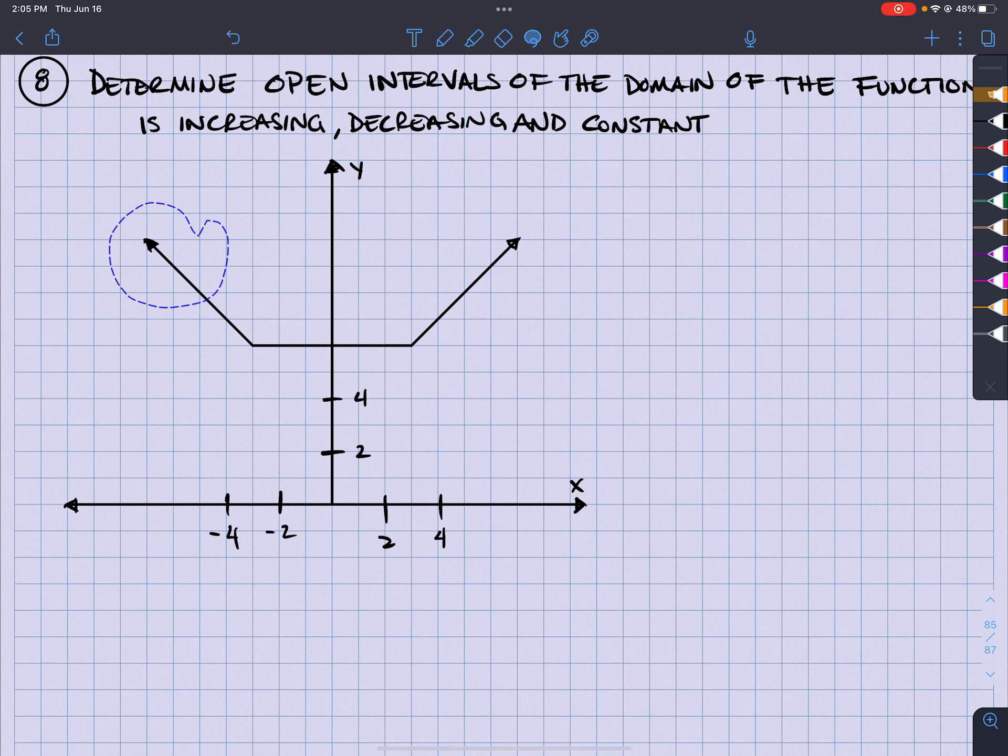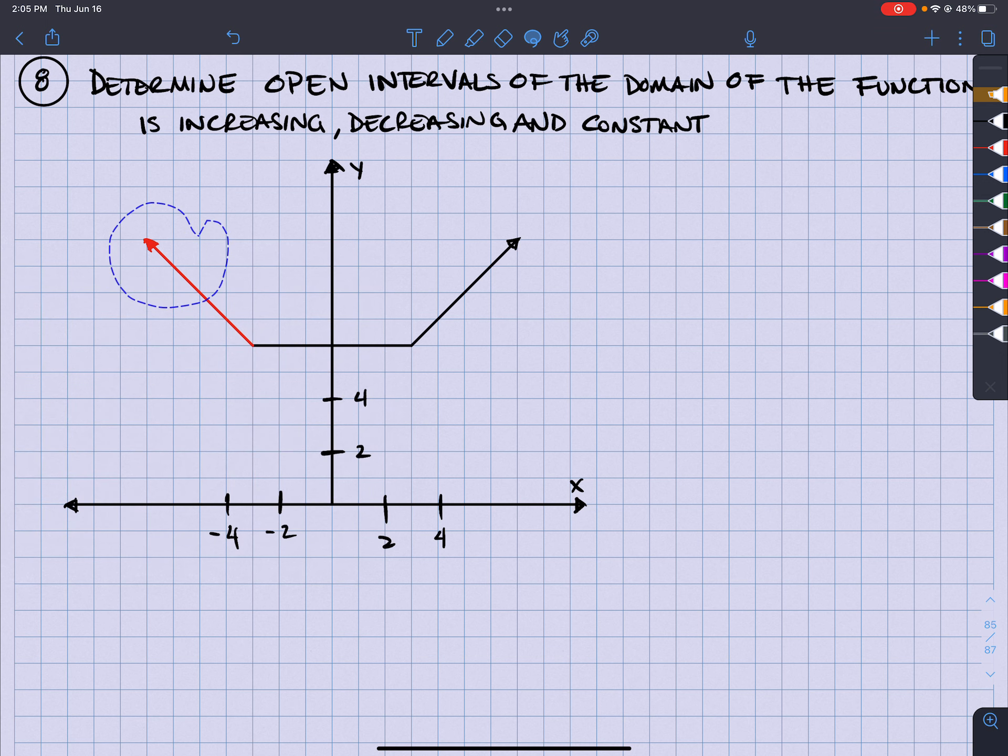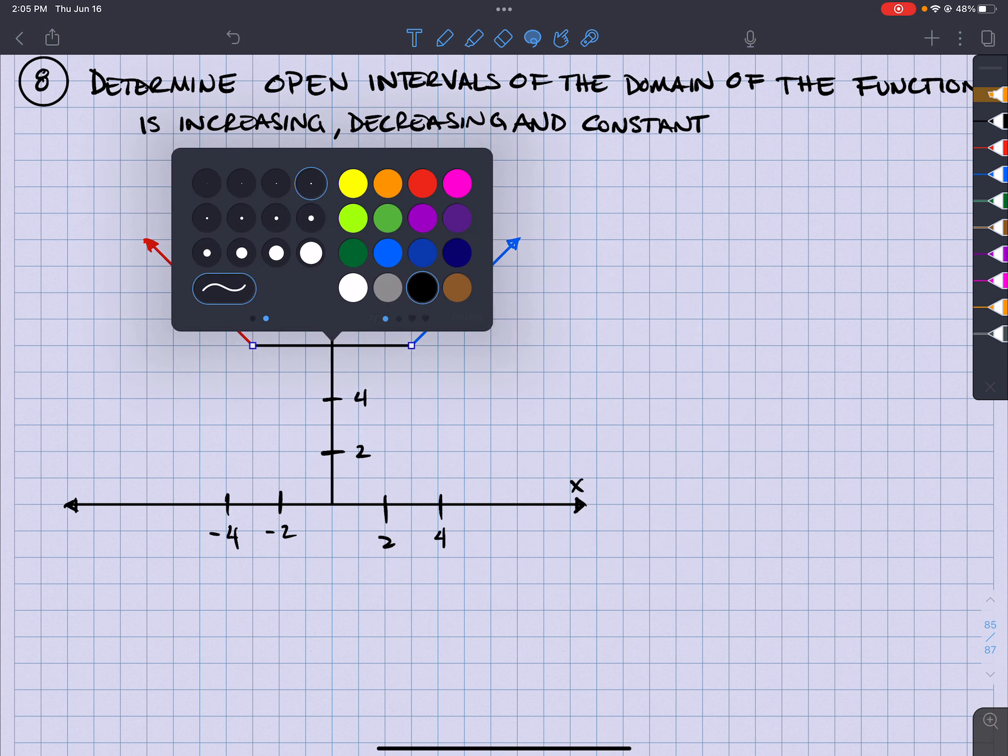So what I can tell you is that this piece right here is decreasing. This piece right here is increasing because going from left to right it's going upward. And this piece right here is constant.